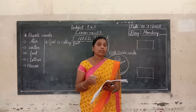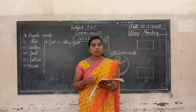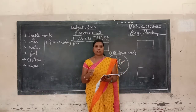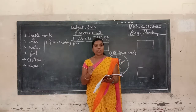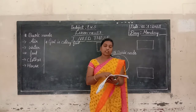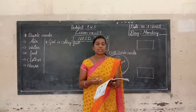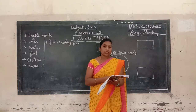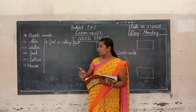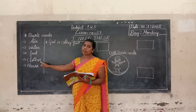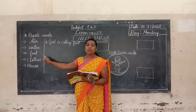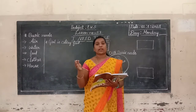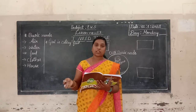Here the boy is wearing cloth. He is wearing a shirt. That is cloth — cloth is very essential for all. Cloth protects us from insect bites, cold wind, and the heat of the sun. That is why we need cloth.